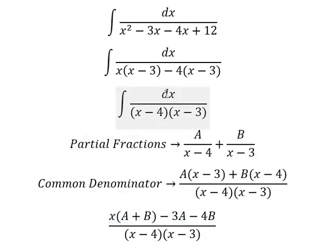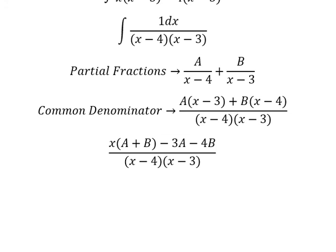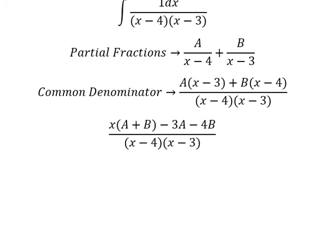Now we see that the coefficient of x in the numerator is 1, so this equals 1. Because we don't have x in the numerator originally, A+B equals 0. Now we have a system of equations.